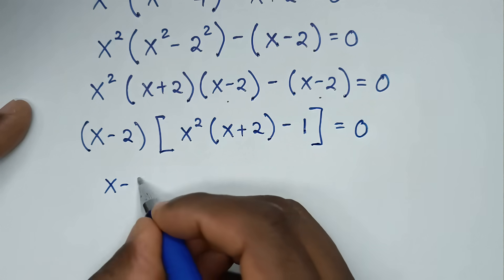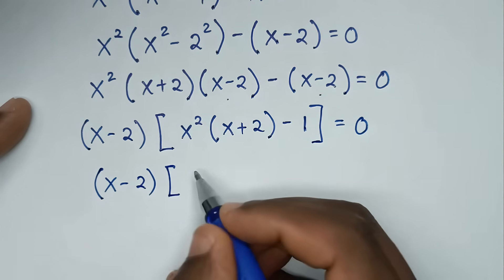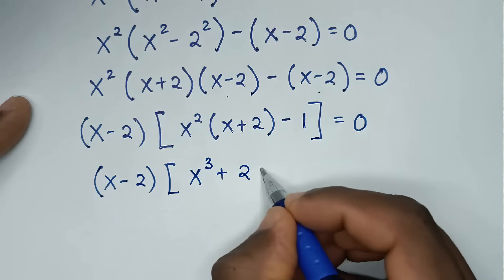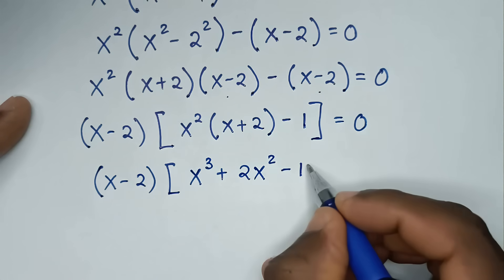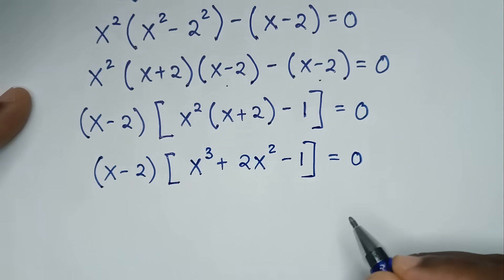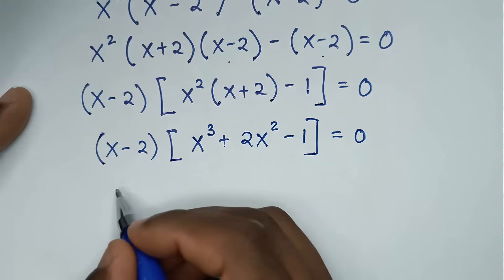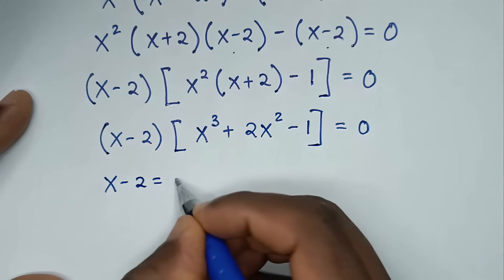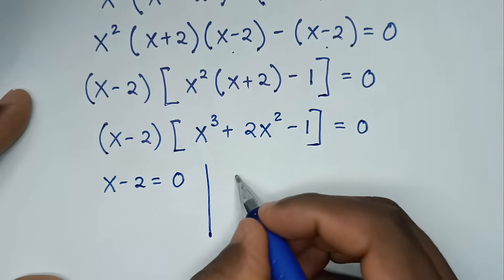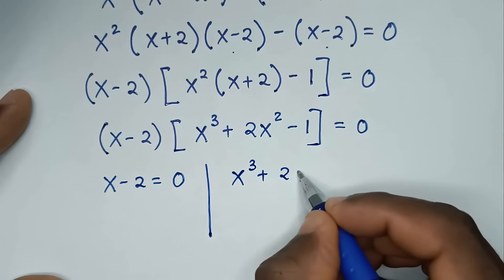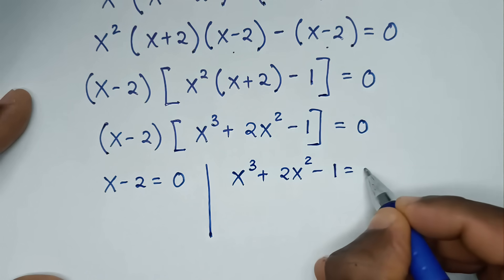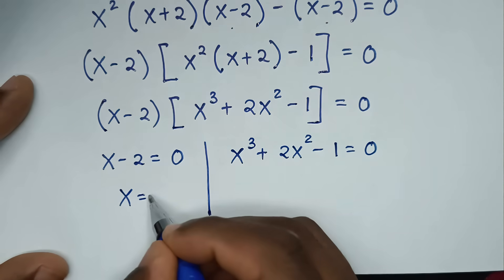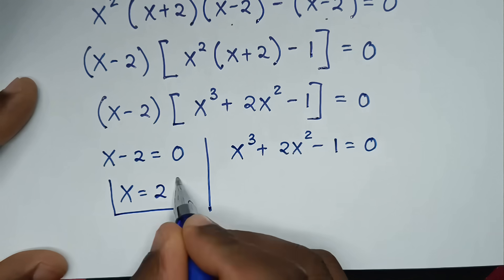Then in the next step, it will be x minus 2 bracket, then bracket, x³ plus 2x² minus 1 bracket, is equal to 0. From here, we'll have two solutions: the first solution of x minus 2 equals 0, and the second solution of x³ + 2x² - 1 equals 0. From x minus 2 equals 0, we take negative 2 to this side, so x equals 2. That's the first solution.